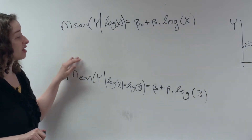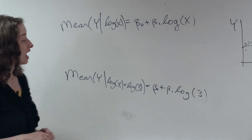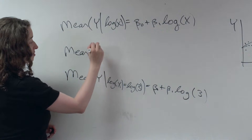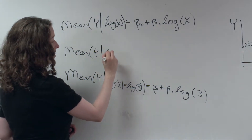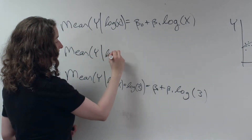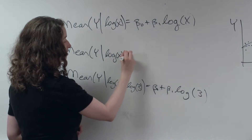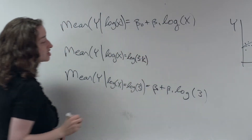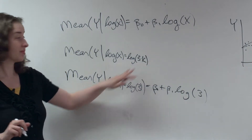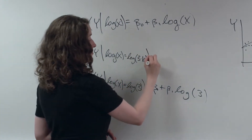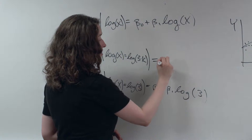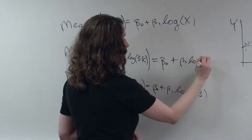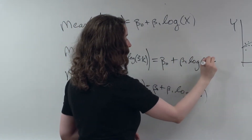But instead of writing the other line to say log of 4, I'm going to say I'm interested in the scenario where we have the mean of y, given the log of x, is equal to the log of 3 times k. And k is just some number — it could be any number. This is equal to beta 0 plus beta 1 log of 3 times k.